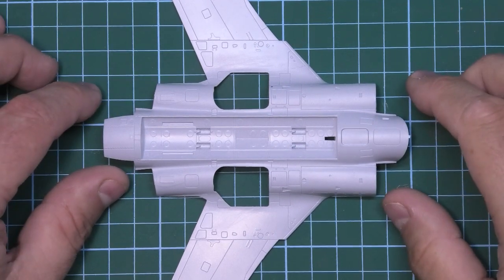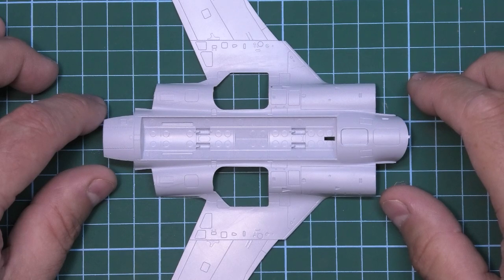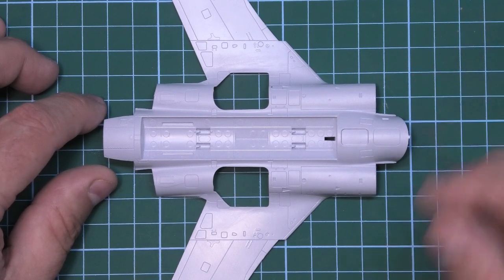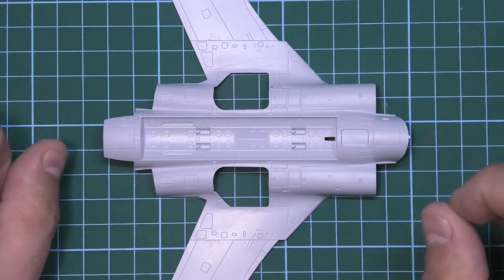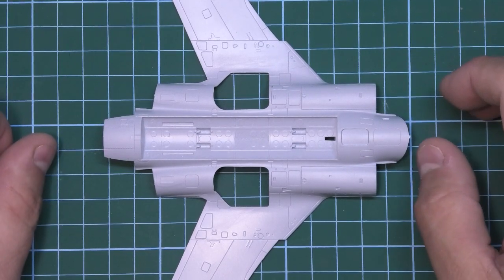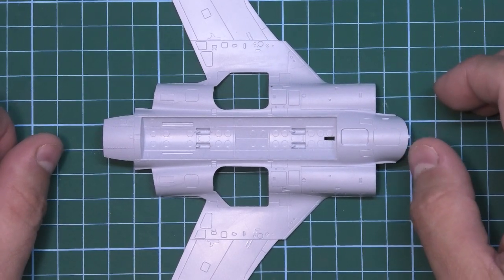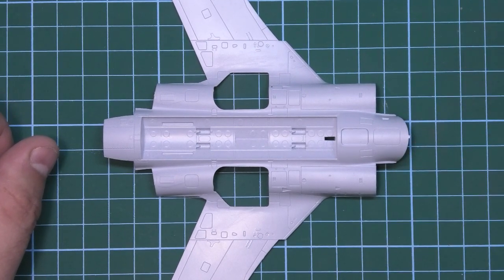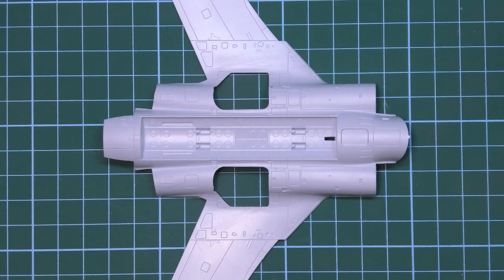But in Fleet Air Arm service, certainly the Buccaneer S1 and I believe probably the S2 as well for some time, carried a single large nuclear weapon called the Redbeard. And that had a distinct fairing in the bomb bay for that weapon.